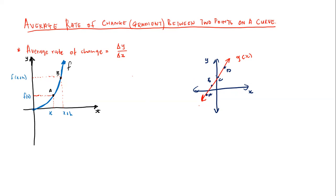Now mathematically, if I ask you to determine the gradient — and I'm talking about the gradient because we're doing average rate of change, also called average gradient — if I say determine the gradient of this linear function g of x, how are you going to do it? To determine the gradient of a linear function, you simply say change in Y divided by change in X.